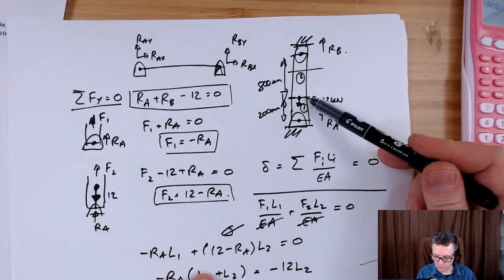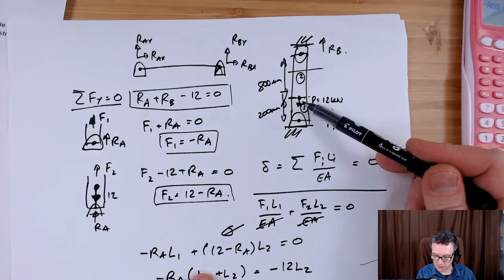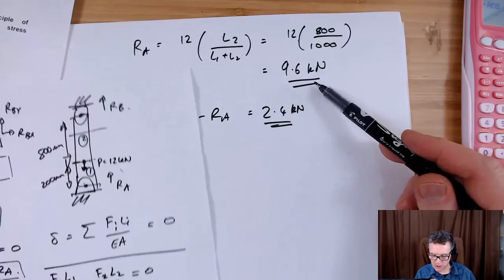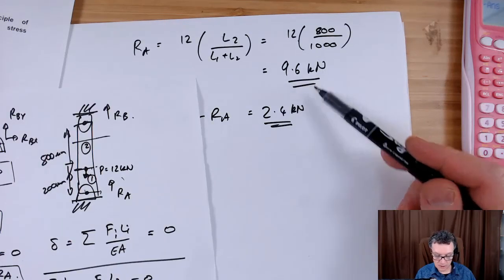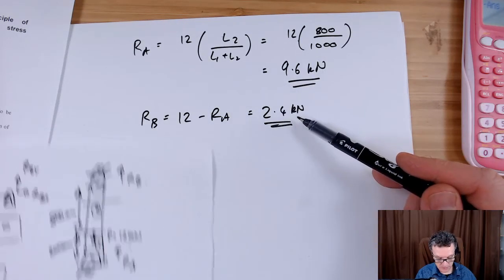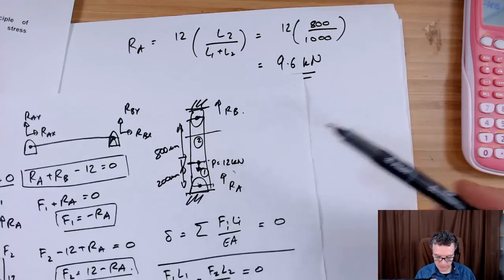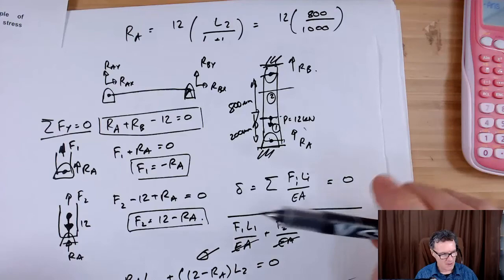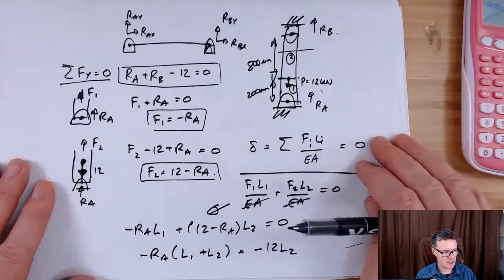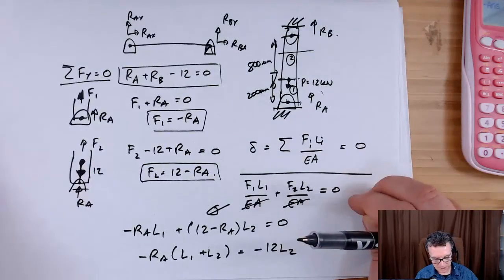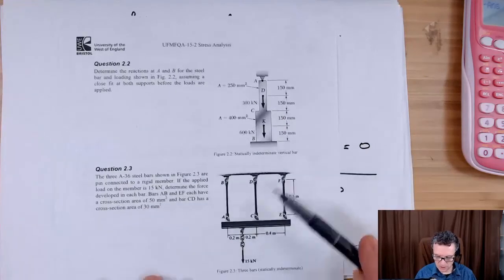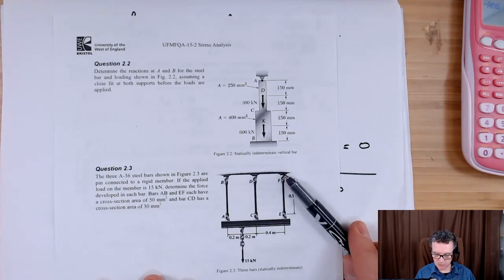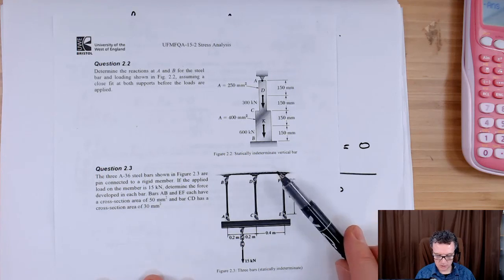And that kind of matches up with what I was guessing before, that this force that I'm applying on the bar is closer to the Ra, and I end up with a reaction that's bigger at Ra compared to Rb. But they're both reactions going upwards, also as I expect. So that's the principle that we're going to be applying next for indeterminate vertical bar problems. This is my preamble explanation for question 2.2.